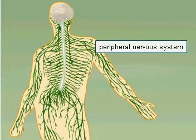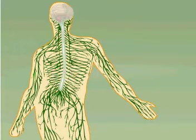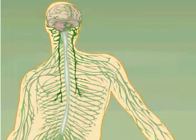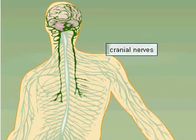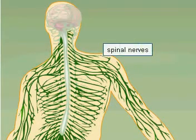The peripheral nervous system is made up of nerves that originate in the central nervous system and run to all body parts, and of nerves that originate in organs and run to the central nervous system. Nerves that are directly connected to the brain are referred to as cranial nerves, while those connected to the spinal cord are referred to as spinal nerves.